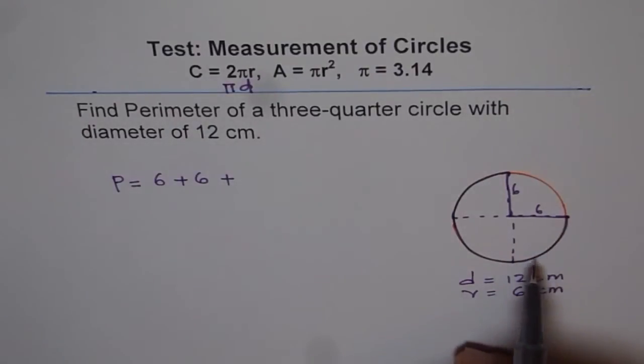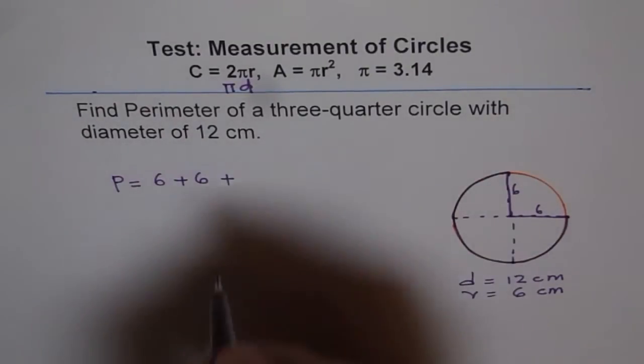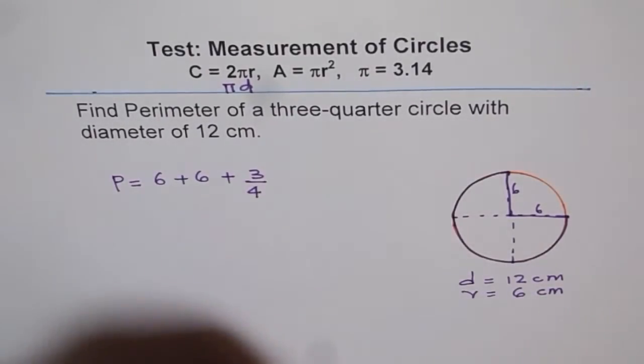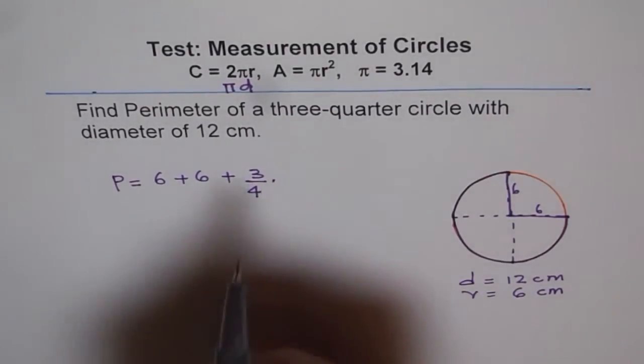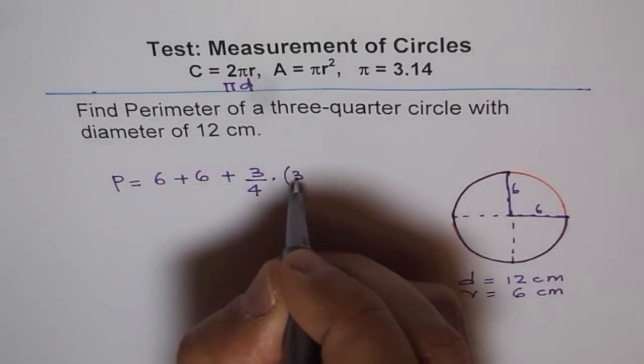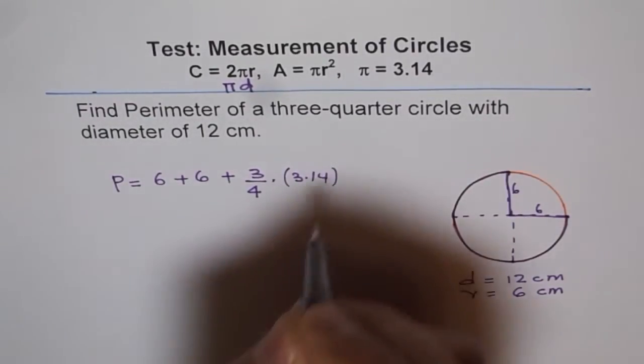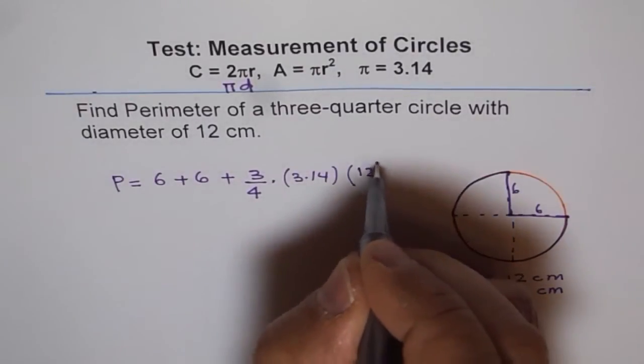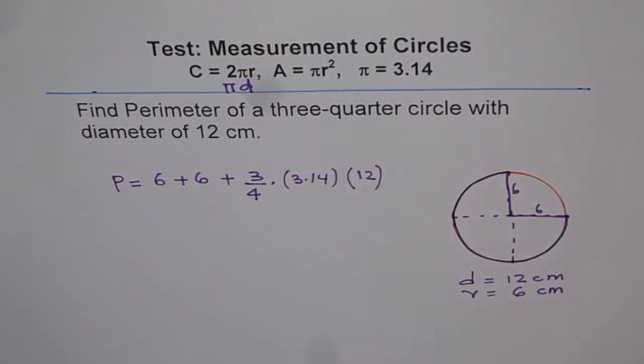So you get three quarters times pi which is 3.14 times diameter which is 12 cm in our case. So that becomes the perimeter.